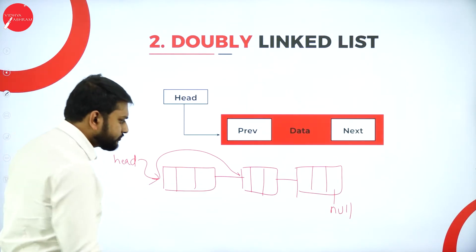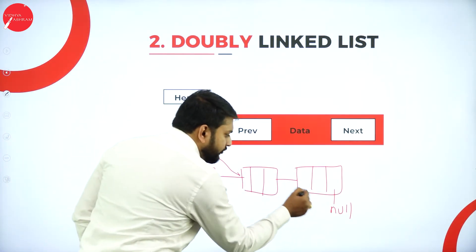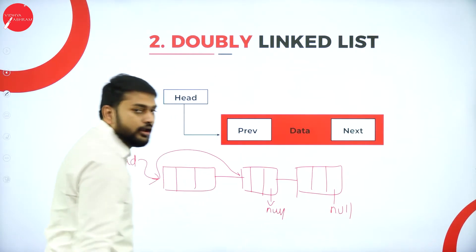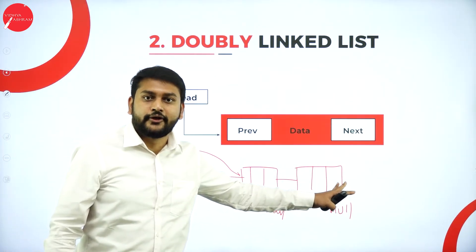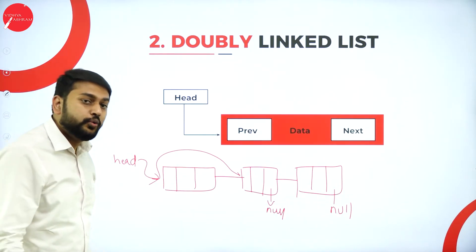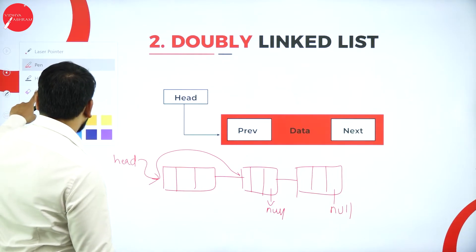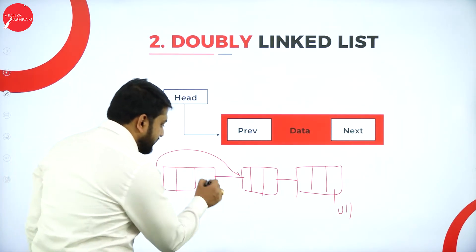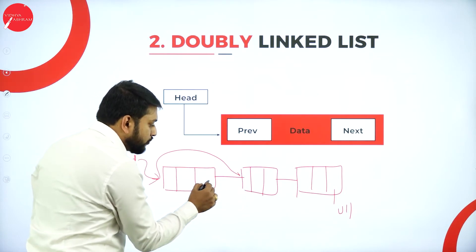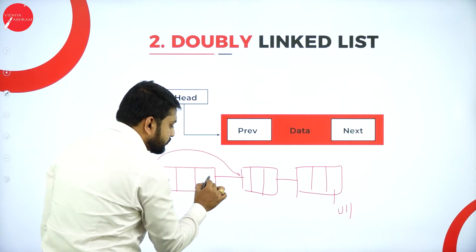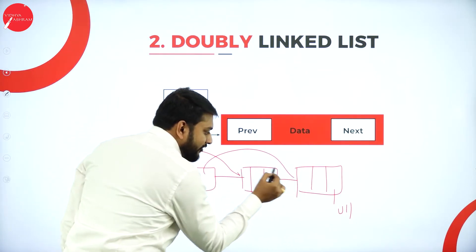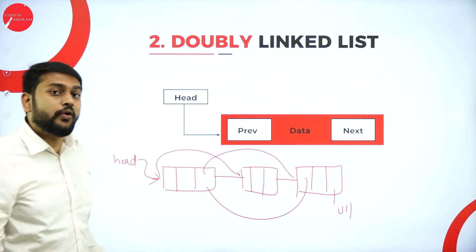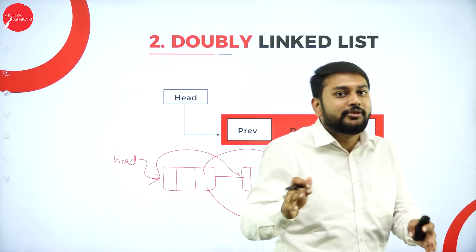For deletion at the end: instead of keeping the address of the next node, make the next part of the second-to-last node null, then free the last node. For deletion at a specified location: find the node, update the next pointer of the previous node to store the address of the node after the deleted one, effectively removing it from the chain.